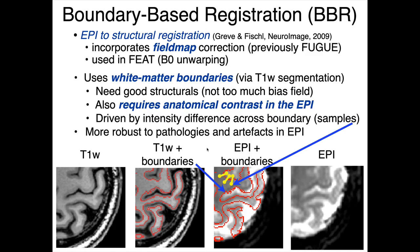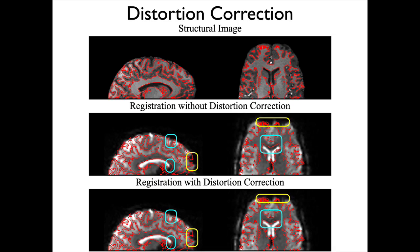BBR concentrates on what is happening at the white matter–gray matter interface, which also makes it more robust to pathologies in the deep white matter or things happening outside the surface of the cortex. It's a very useful cost function and is definitely what we recommend.